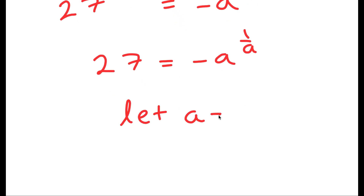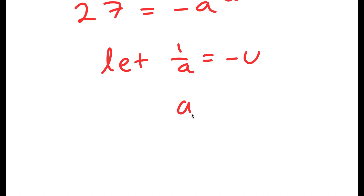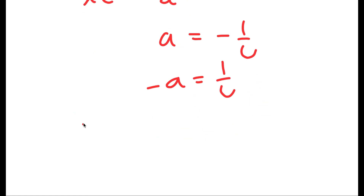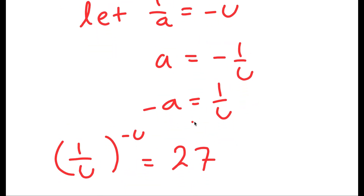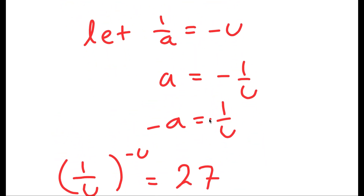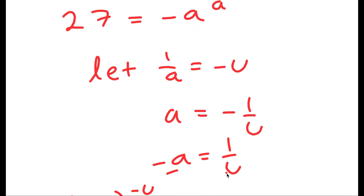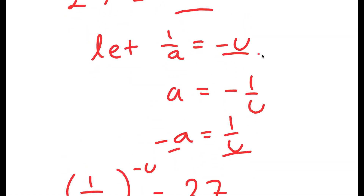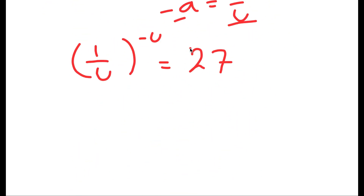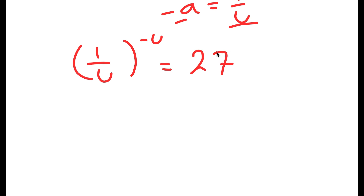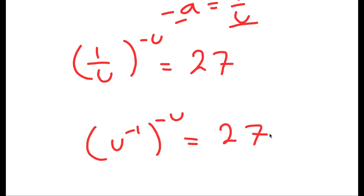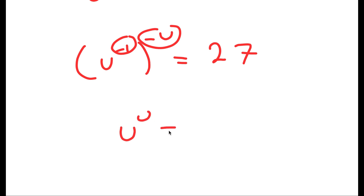I'm going to let 1 over a equal to negative u. So if 1 over a equals negative u, this means that a is equal to negative 1 over u, and negative a is equal to 1 over u. This means (1 over u) to the power of negative u is equal to 27, because negative a is 1 over u and 1 over a is negative u. Now I'm going to rewrite 1 over u as u to the power of negative 1, so these two exponents multiply, and I get u to the power of u is equal to 27.